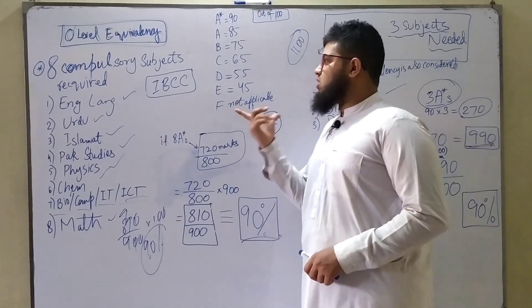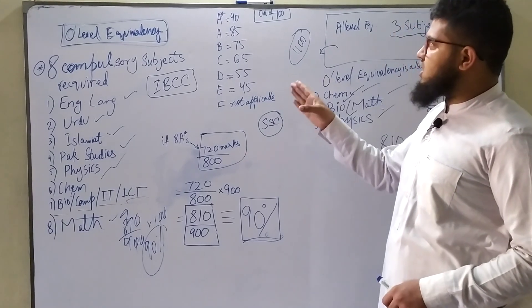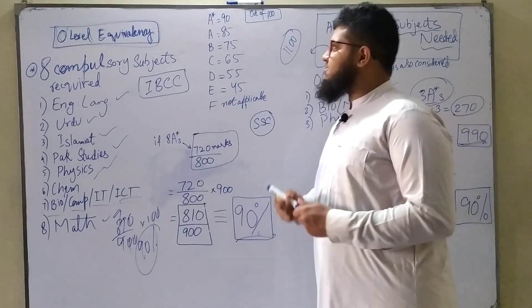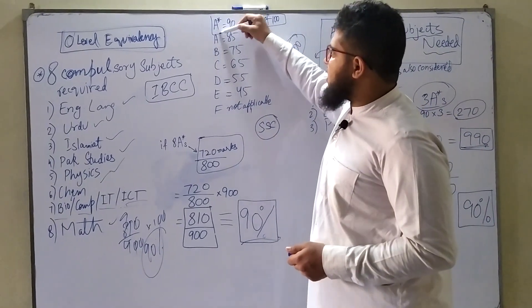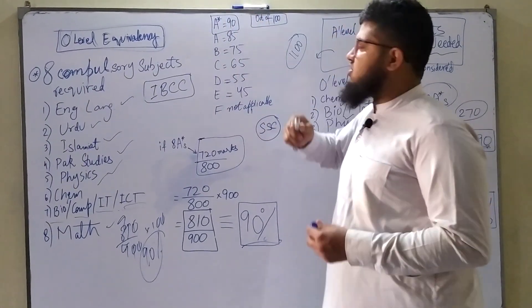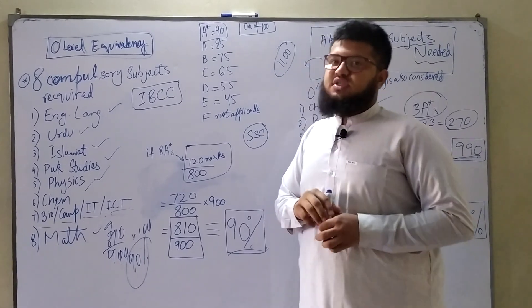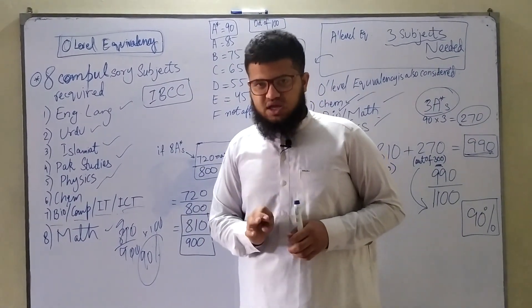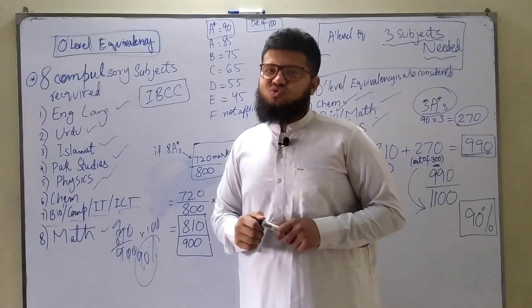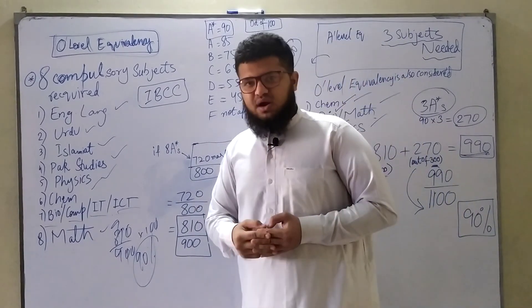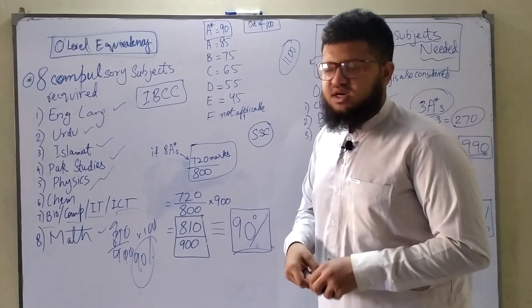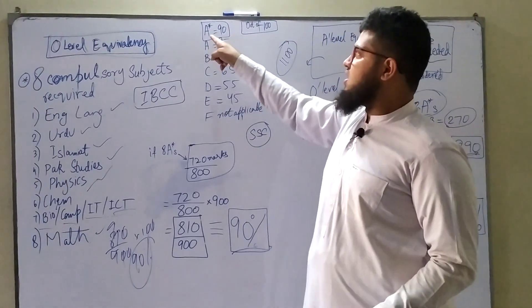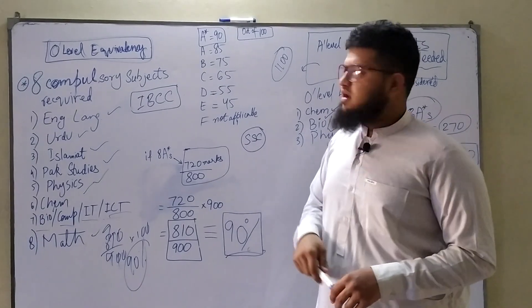These are the marks that you'll get on the basis of the grades that you get in your subjects. Now whatever grades you get, they'll be converted into Pakistani system. And these marks are out of 100. Now if you look here carefully, even if you get an A star, you cannot get 100 out of 100. You'll only get 90 out of 100. So this means you cannot go above 90.